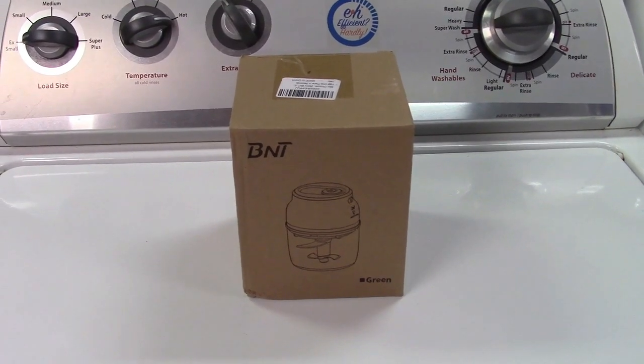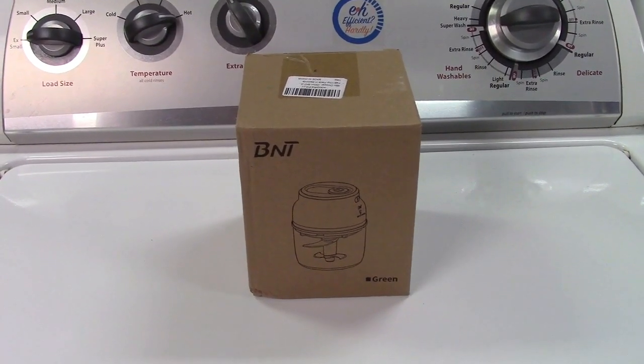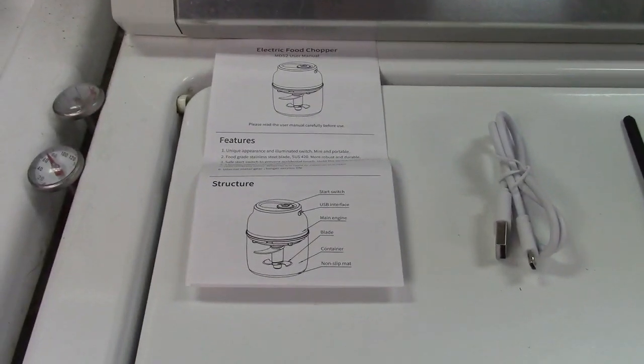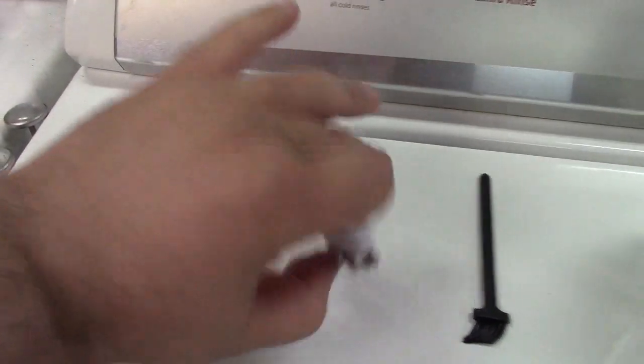This is the BNT Mini Cordless Chopper. Let's take it out of the box. In the box you get an instruction booklet, a USB cable which is USB to micro USB.